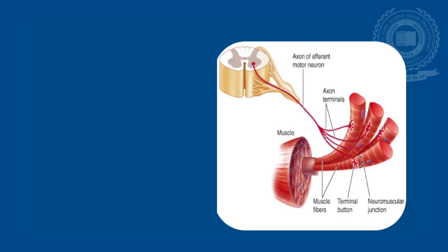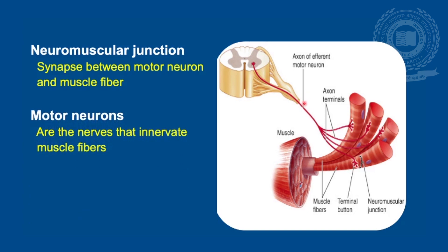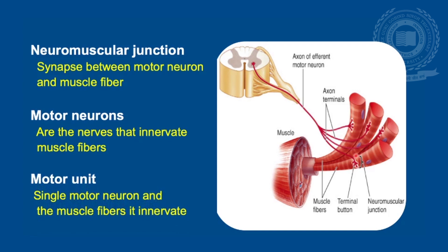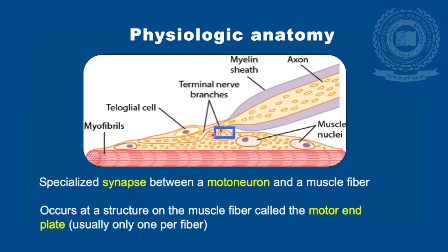Before going into the details of the Neuromuscular Junction, I'll brief you about the various terminologies that will come across the topic. A Neuromuscular Junction is a synapse between the motor neuron and the muscle fiber. Motor neurons are the nerves which innervate the muscle fiber. A motor unit is a single motor neuron and the muscle fibers that it innervates. The NMJ occurs at a structure on the muscle fiber called the motor end plate — normally one per fiber.